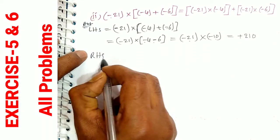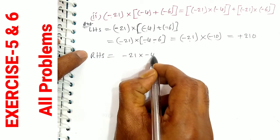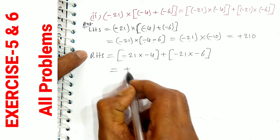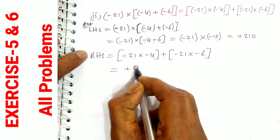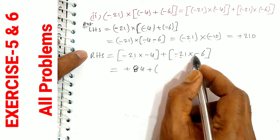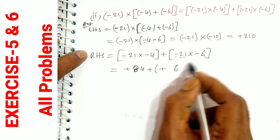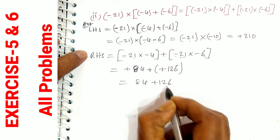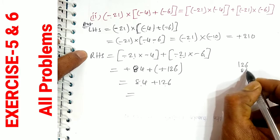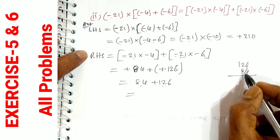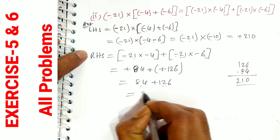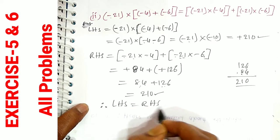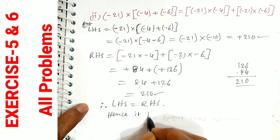Next, RHS. RHS is minus 21 into minus 4 plus minus 21 into minus 6. Minus into minus is plus: 21 into 4 equals 84. Plus minus 21 into minus 6: minus into minus is plus, 21 into 6 is 126. So 84 plus 126. Adding: 4 plus 6 is 10, carry 1; 8 plus 2 plus 1 is 11, carry 1; giving 210. So RHS is 210 and LHS is 210. Therefore LHS is equal to RHS, hence it is verified.